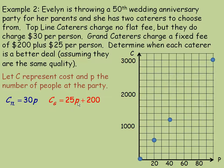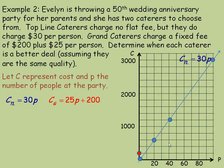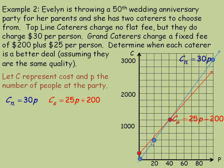For the Grand Caterer, if P equals 0, then 25 times 0 plus 200 is 200, so that line starts at 200. At 40 people, 25 times 40 is 1000, plus 200 is 1200. So at 40 people, both caterers charge $1200 — that is the intersection point where they are the same. We draw and label the Grand Caterer line. Below 40 people, the Top Line Caterer is cheaper; above 40 people, the Grand Caterer is cheaper.